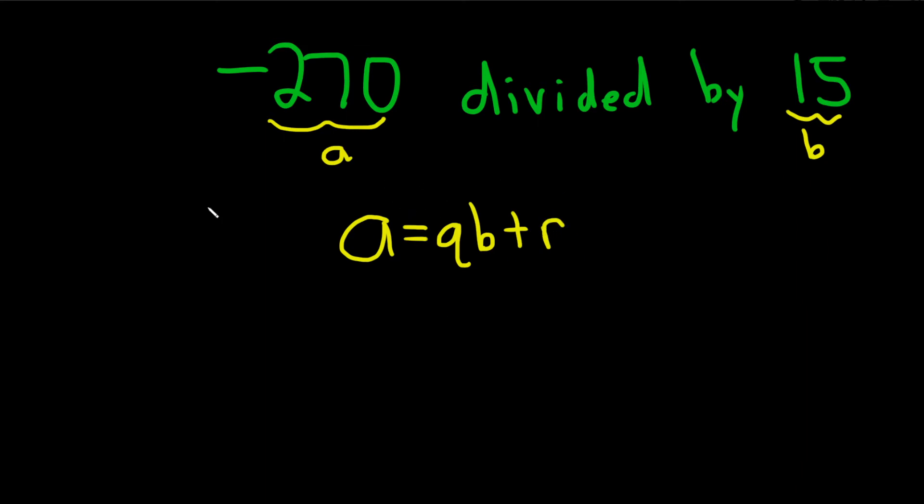So now we're going to perform the division. So negative 270 divided by 15. I'm going to put this in my calculator and see what we get. Oh, how nice, negative 18.